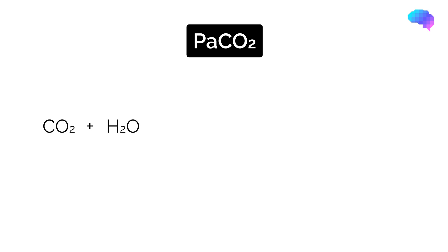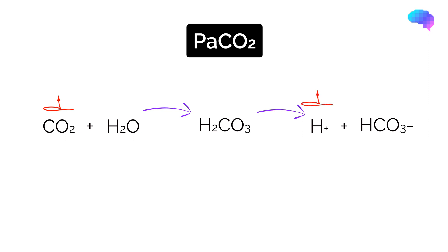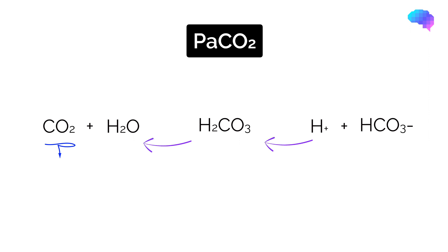CO2 binds with H2O and forms carbonic acid, H2CO3, which can then rapidly dissociate into hydrogen ions and bicarbonate ions. When a patient is retaining CO2, the blood will become more acidotic, as the equation has been driven to the right, releasing hydrogen ions, thus lowering the pH. When a patient is blowing off CO2, the equation is driven to the left, reversing the process.